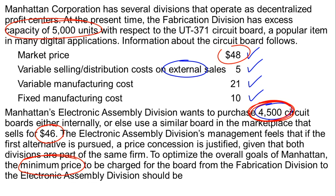Looking at the four numbers given: market price is irrelevant. Variable selling and distribution costs on external sales don't matter because this is an internal sale — there's no commission or distribution costs to pay. Variable manufacturing cost at $21 looks like our answer. Fixed manufacturing costs are also irrelevant because, with excess capacity on an internal short-term decision, fixed costs will continue whether or not we fill this order.